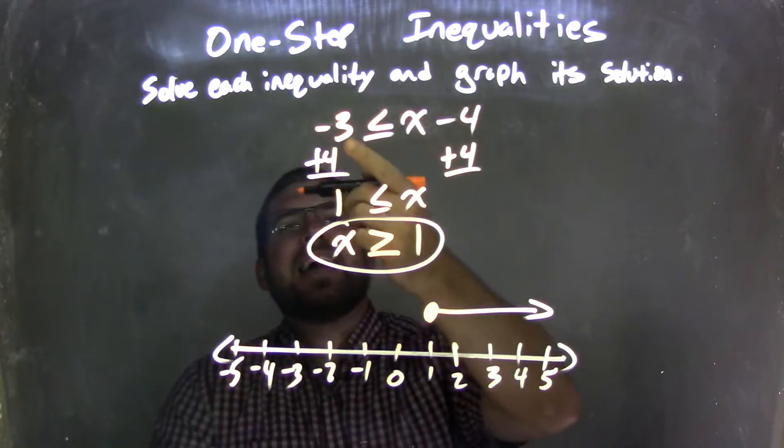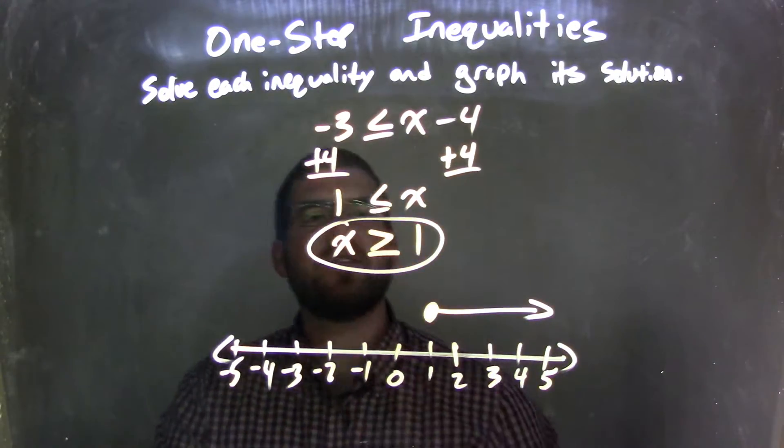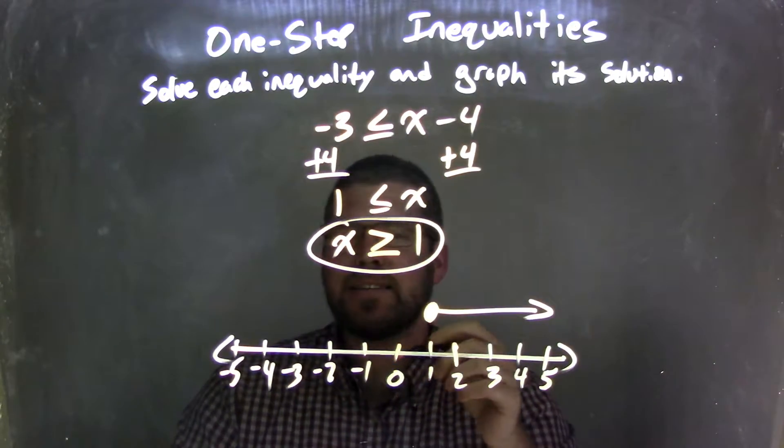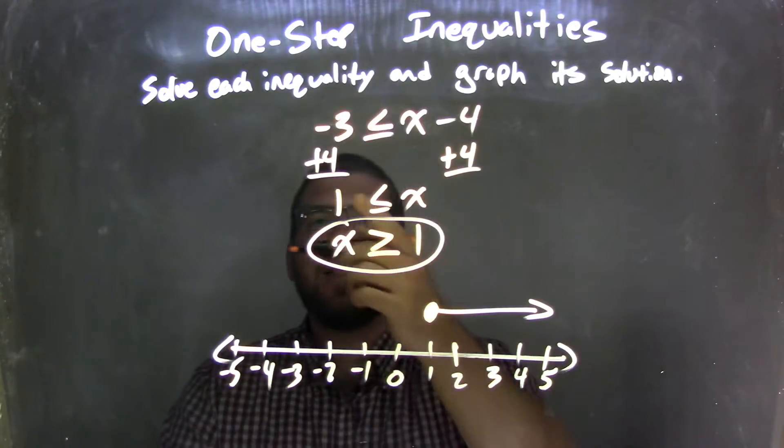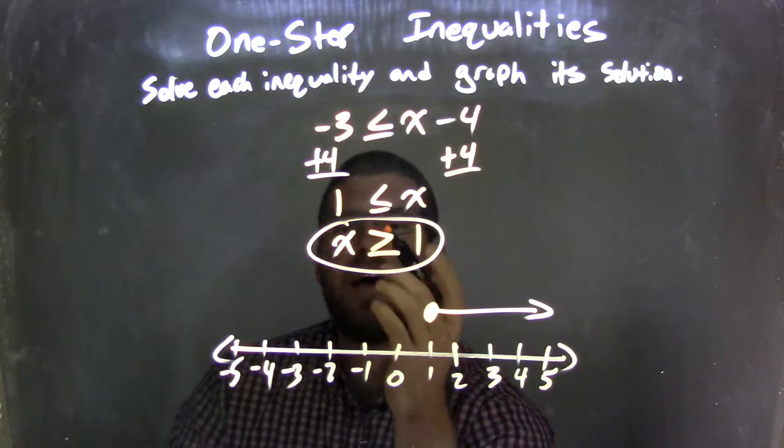Let's recap. We're given -3 ≤ x - 4. I added 4 to both sides, giving me x by itself on the right. Then on the left, I had -3 + 4, which is positive 1. I then rewrote this to have x come first,